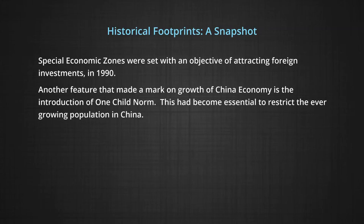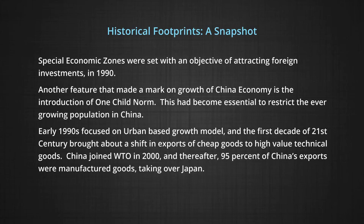Another feature that marked the growth of China was the introduction of the one child norm, which became essential to restrict the ever-growing population. The early nineties focused on an urban-based growth model, and the first decade of the 21st century brought a shift from exports of cheap goods to high-value technical goods. China joined the WTO in 2000, and thereafter 95 percent of China's exports were manufactured goods. By 2014, outward investments moved ahead of inward investments, making China's economy one of the strongest in the world.